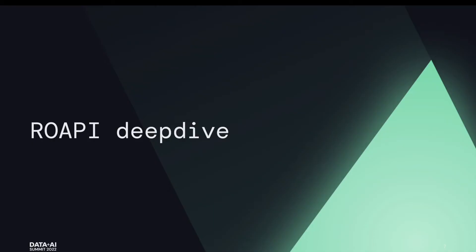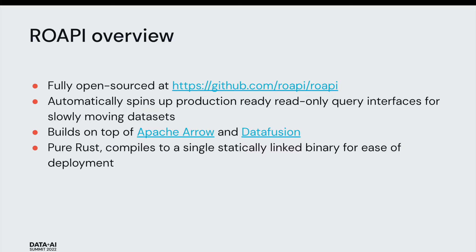This is where ROAPI comes in. The project is fully open sourced on GitHub. The main goal is to make it really easy to spin up a production-ready, read-only query interface for slowly moving datasets. It's built on top of Apache Arrow and DataFusion — I'm a contributor to both of these projects. It's written in pure Rust, which means the whole codebase gets compiled into a single statically linked binary.